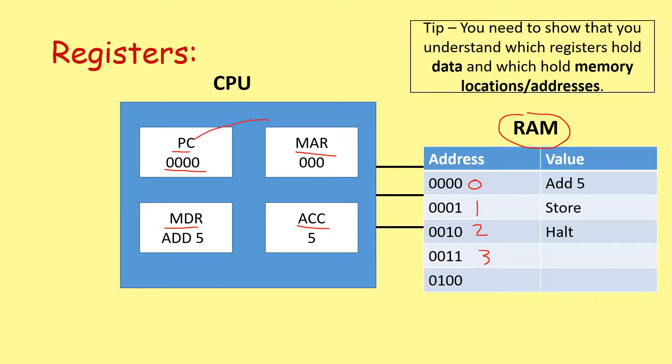Now this data then gets transferred to the memory address register. The memory address register is where we hold any memory location for data that we're going to fetch from memory or send to memory. So again, it's not holding any actual data. It's just going to hold a location in memory, a memory address. So in this case, it's saying we need to fetch some data from memory location 0.